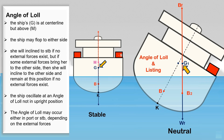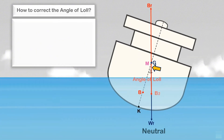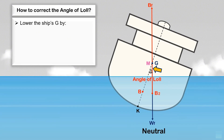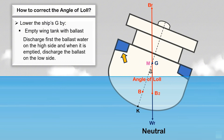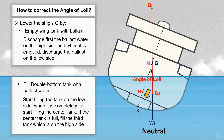To correct the angle of loll, take action to reduce the ship's KG by lowering the ship's center of gravity below the metacenter. If you have a wing tank full of ballast, empty it by discharging the ballast on the high side first; when emptied, discharge the ballast on the low side. Another way to lower the ship's G is through ballasting — select a subdivided double bottom tank and fill it in this sequence: if divided into three compartments, start filling the tank on the low side, then when full, fill the center tank, and finally fill the third tank on the high side.